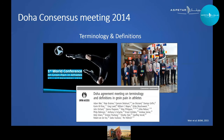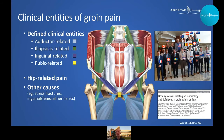In 2014, 24 groin experts came together in Doha to tackle this issue of heterogeneous terminology and agreed on a standard classification system — the Doha Agreement classification system — with four defined clinical entities: adductor, iliopsoas, inguinal, and pubic-related groin pain, plus hip and other causes as the remaining two potential classifications.